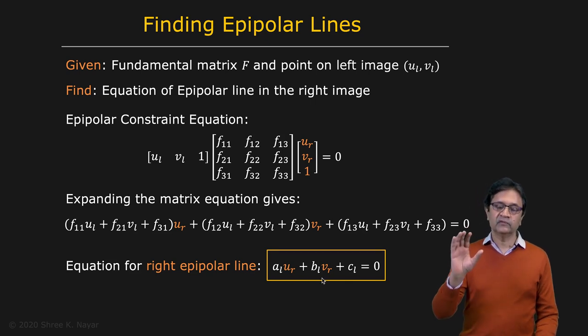So given that we know the fundamental matrix, you give me any point in the left image, which is UL, VL, I can tell you the line in the right image along which the corresponding point should lie. That's the straight line right here. Very simple.